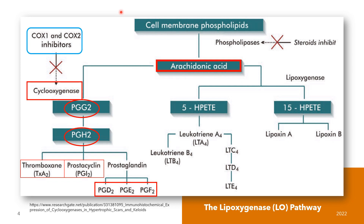Almost all normal tissues show expression of COX-1, which has a mainly homeostatic function, and low levels of COX-2, which is mainly induced by inflammatory stimuli. Therefore, specific inhibitors of COX-2 have been developed to inhibit inflammation without blocking the protective effects of the constitutive prostaglandins.